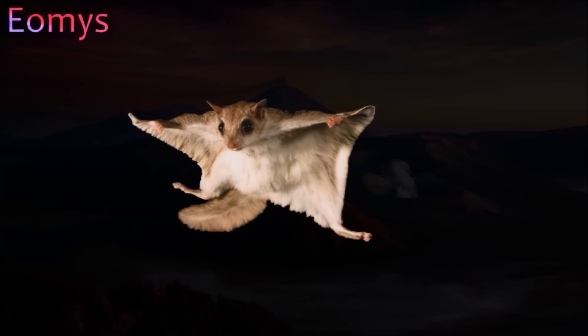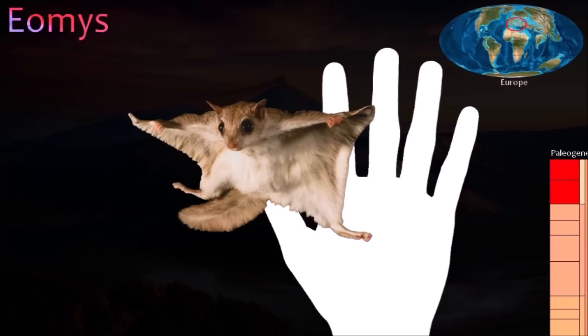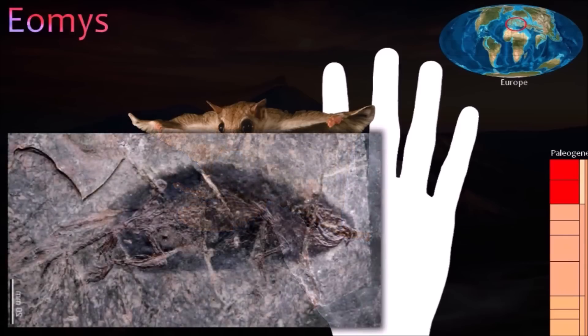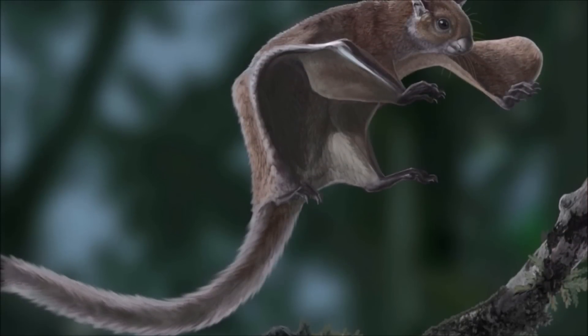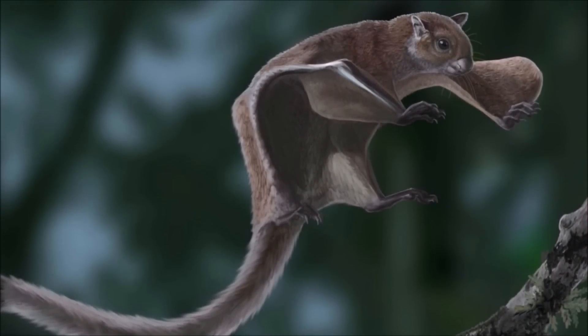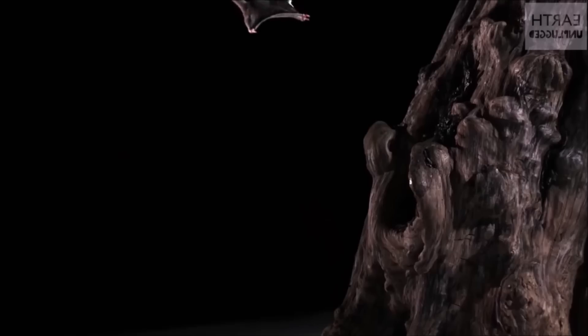Anomis was a small, gliding rodent. Several nearly complete skeletons show that it had a long skin membrane between its front and back legs, similar to that of living flying squirrels. Although the Eurasian Anomis had evolved a gliding lifestyle, dozens of other members of the Anomyidae family appear to have been ground or tree squirrels. The Anomyids became extinct two million years ago and are thought to have been relatives of modern pocket gophers.